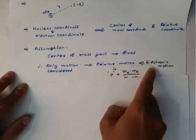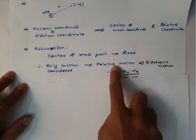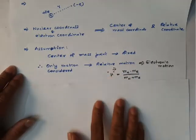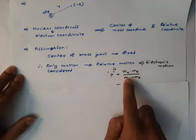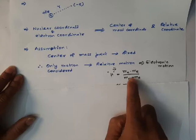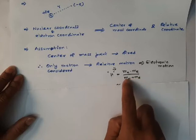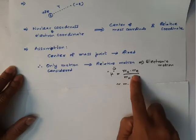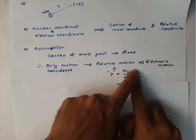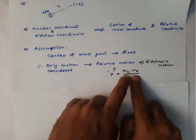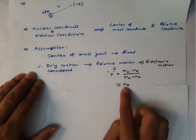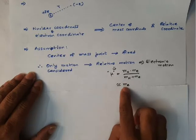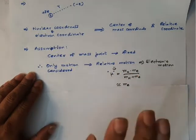Relative motion is also called electronic motion, because the reduced mass μ equals (mass of nucleus × mass of electron) divided by (mass of nucleus + mass of electron). Since the nucleus mass is much heavier than the electron mass, you can neglect the mass of the electron in the denominator, and the nucleus masses cancel. Therefore, the reduced mass is approximately equal to the mass of the electron. So relative motion is nothing but the motion of the electron — that is why it is called electronic motion.